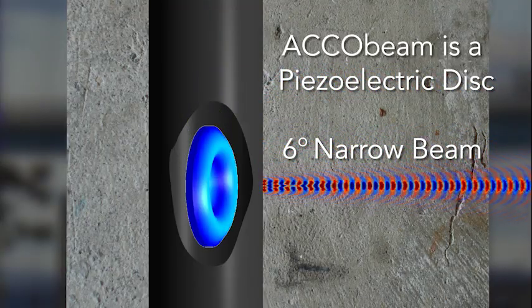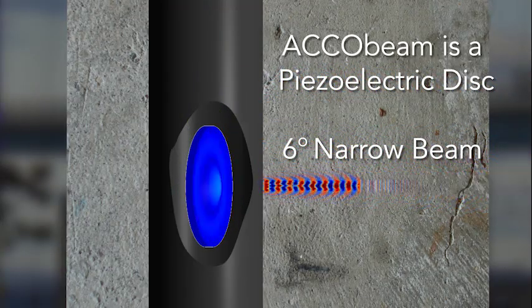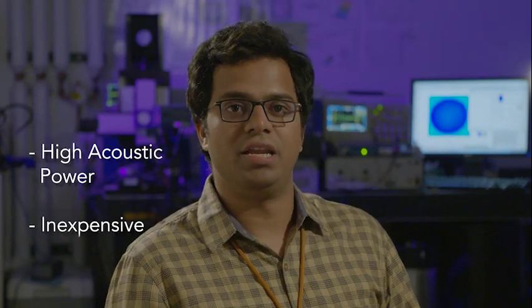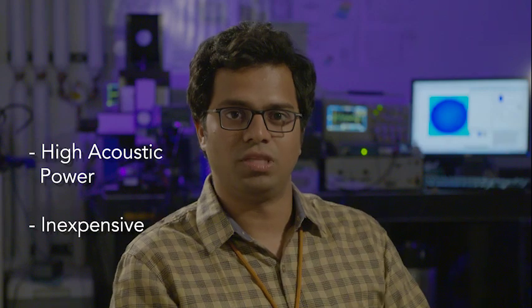It is so narrow, it spreads only six degrees. ACCO beam is high power, and because of the way it's designed, it's incredibly inexpensive compared to everything else out in the market.